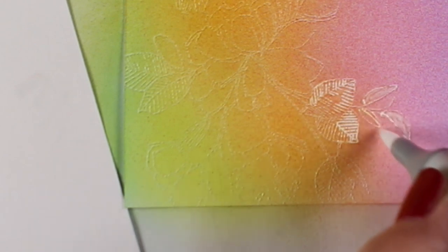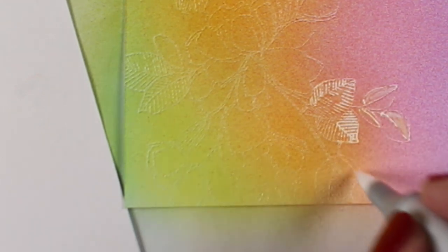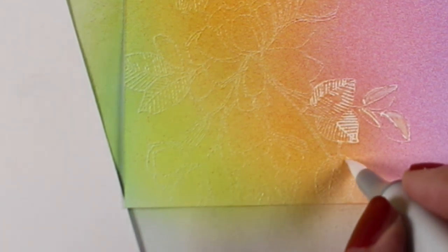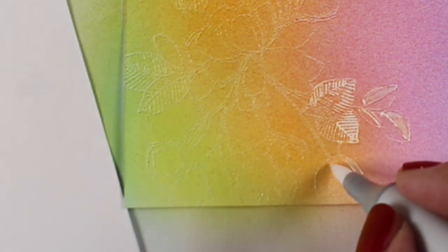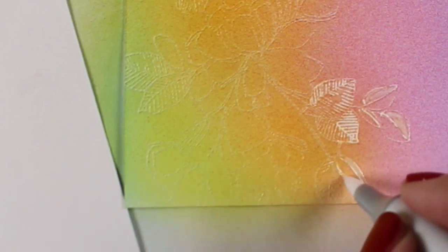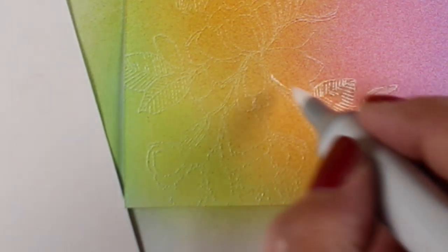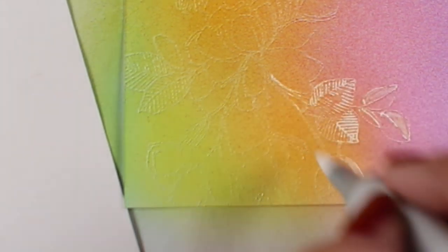So now I have my beautiful airbrush background done. And I'm going to use the colorless blender to open up some areas. And the colorless blender I've got a little bit of scrap paper off to the side in case my marker seems to feel like it needs to be scribbled off a little bit.